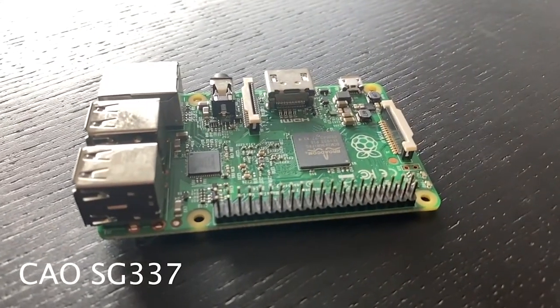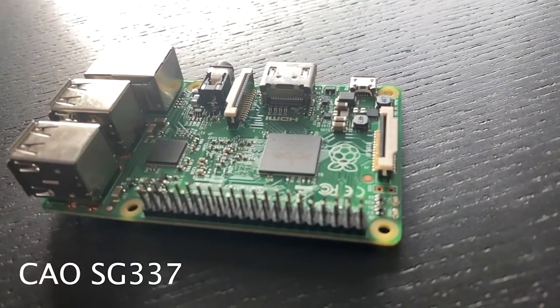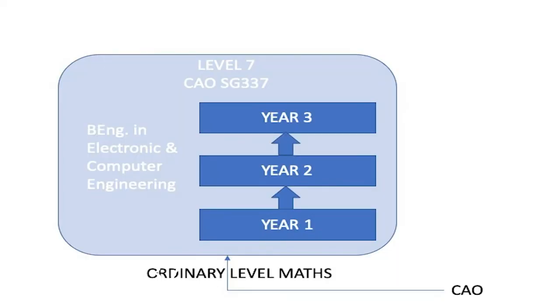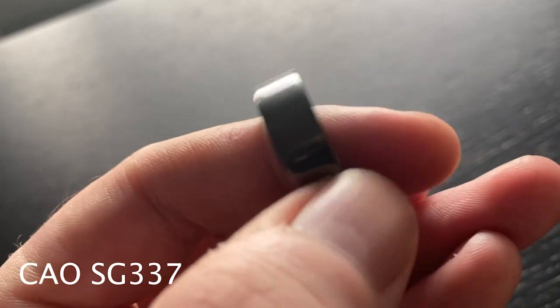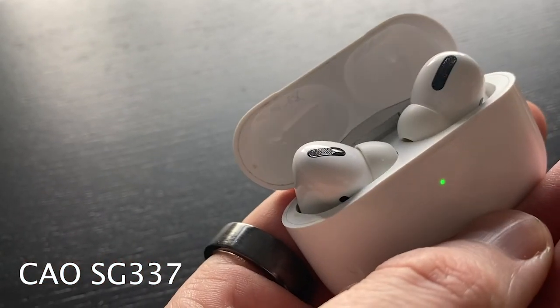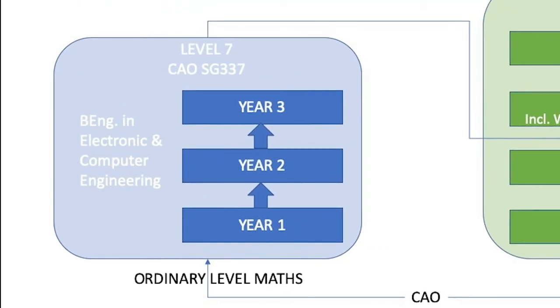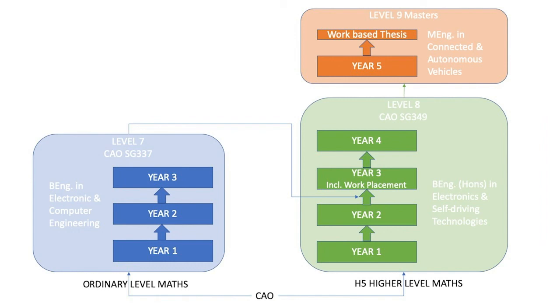If you are interested in technology or engineering but are not doing higher level maths, why not consider our level seven in electronic and computer engineering? This is a three-year programme that looks at the design and development of embedded electronic systems. These are the medical devices that keep us healthy, the consumer devices that keep us entertained, or the control systems that keep us safe on the road. You can then progress onto the level eight in electronics and self-driving technologies and from there to the masters. Check out the link below for more information.